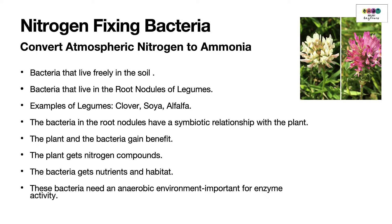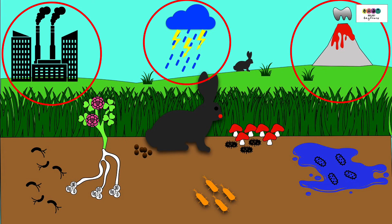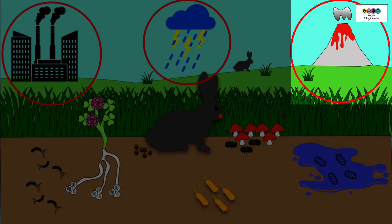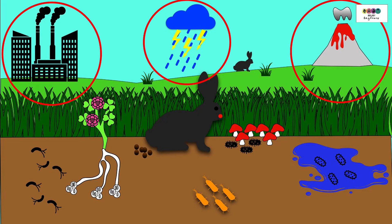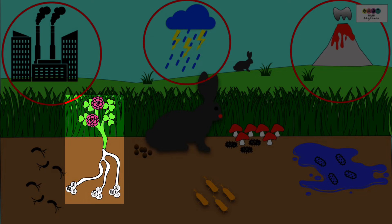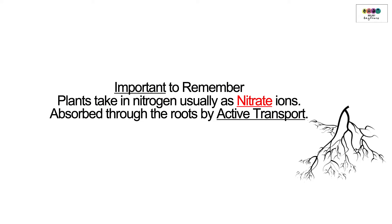The bacteria in the root nodules of legumes require an anaerobic environment, which is important for a particular enzyme. In the diagram you can see the Haber process, lightning, and volcanoes for nitrogen fixation, as well as free-living bacteria in the soil and red clover with root nodules containing nitrogen-fixing bacteria. Plants take in nitrogen usually as nitrate ions, absorbed through the roots by active transport.